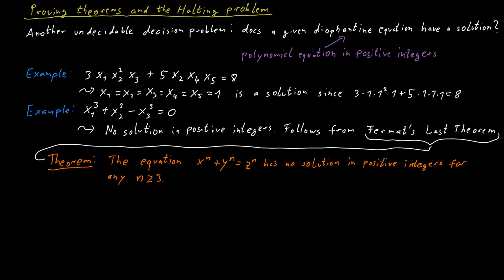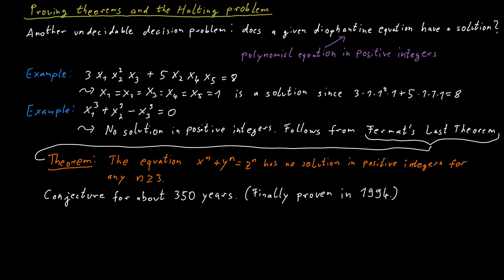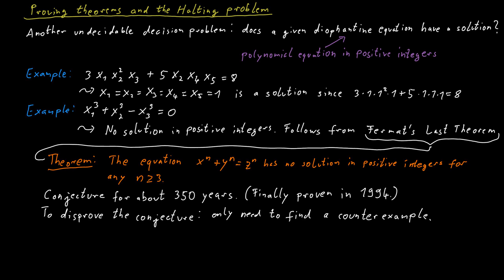Let us talk about Fermat's Last Theorem some more. Fermat's Last Theorem was an elusive conjecture for about 350 years before it was eventually proven in 1994. So for 350 years it was not known whether this conjecture is true or not — whether there exists some equation of the form x^n + y^n = z^n that has a positive integer solution for some n at least 3. To disprove the conjecture, all you would have to do is find positive integers x, y, z, and n that satisfy this equation with n at least 3.